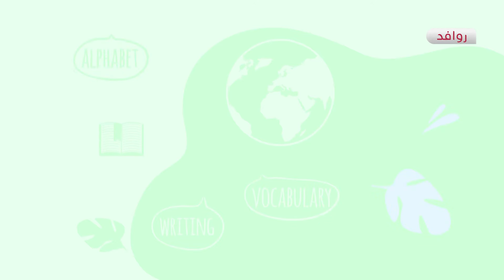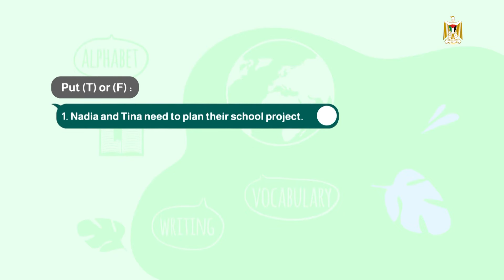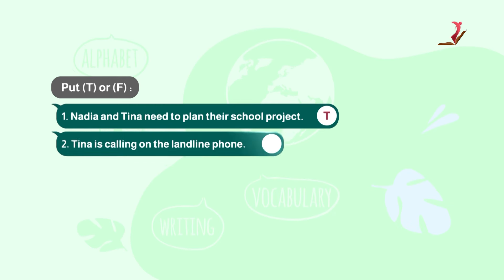Now let's answer the questions. Question 1 — True or False: Nadia and Tina need to plan their school project? This sentence is true. Question 2 — Tina is calling on the landline phone. Is that correct? No, she is calling on the mobile phone. The correct answer is she is using her mobile.